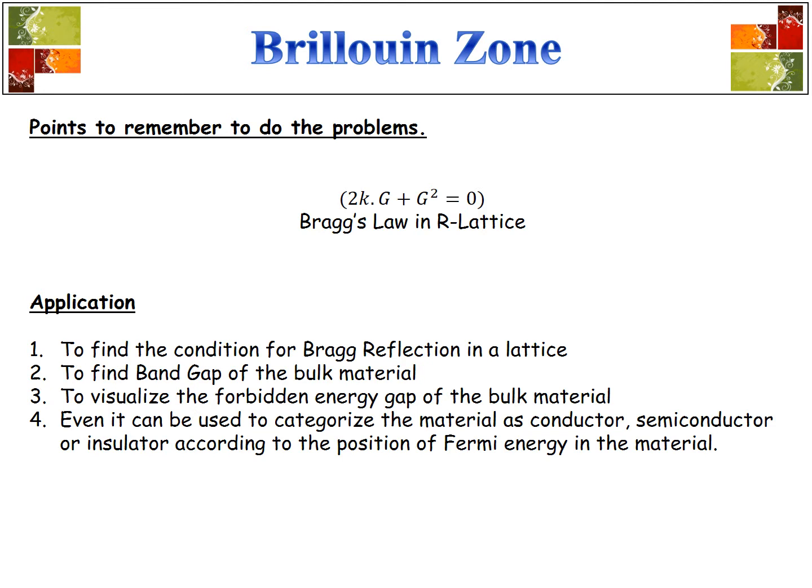The only point to remember to solve problems is: 2k·G + G² = 0, which is called Bragg's law in the reciprocal lattice. This topic has immense application: it is used to find the condition for Bragg reflection in a lattice.